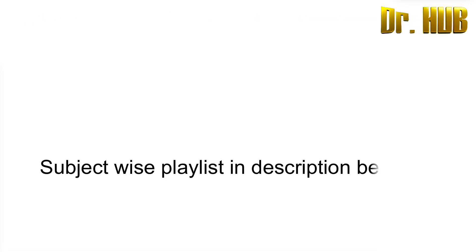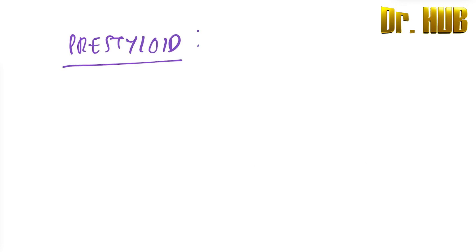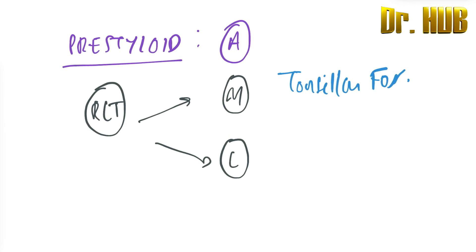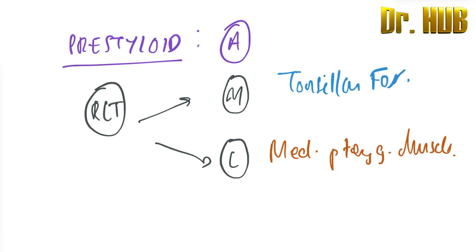In the pre-styloid, the relation to the styloid is anterior. Medially, it is the tonsillar fossa, and laterally it is the medial pterygoid muscle. So a quick mnemonic here: M and T — empty — medial tonsillar fossa, lateral medial pterygoid muscle.